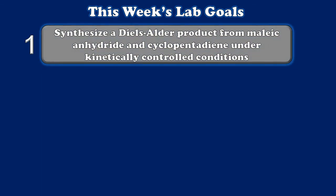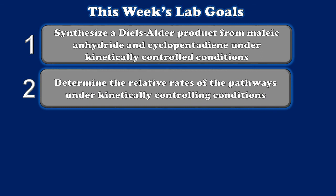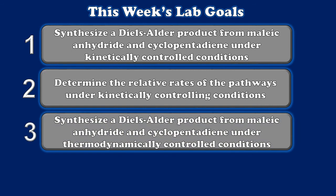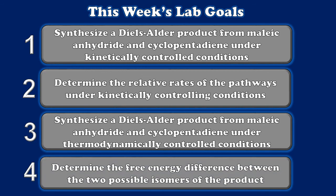Now that we have our fundamentals in place, let's talk about the goals for this week. Our first goal in lab will be to synthesize the Diels-Alder product from maleic anhydride and cyclopentadiene under kinetically controlling conditions. We'll then determine the relative rates of the two pathways under those conditions using GC-MS. Next, we'll synthesize the Diels-Alder product from the same two starting materials but this time under thermodynamically controlling conditions, and again use GC-MS to determine the free energy difference between the two possible isomers of the product. Using the chromatograms generated by the GC portion of our GC-MS experiment we'll be able to tell exactly how much of each product is forming under each set of conditions.